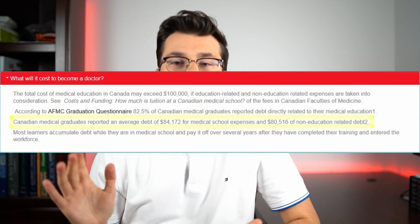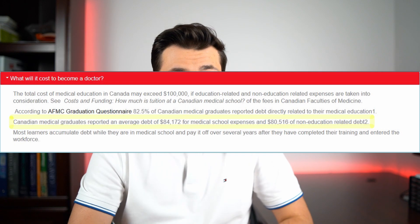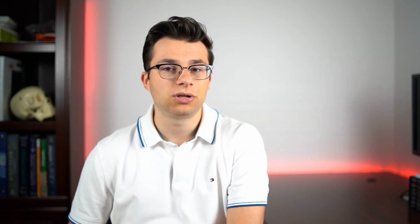For four years, the average medical school tuition cost alone is between $70,000 and $80,000 depending on the province. Looking at debt, the average medical student has around $85,000 of debt from medical school expenses directly and an additional $80,000 of non-medical school related debt, coming to around $165,000 total debt when you graduate medical school in Canada.